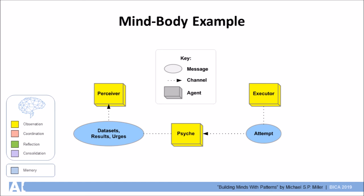This app is called the Psyche app and the Psyche app sends attempt results, sensory data sets, and homeostatic urges to the perceiver agent.